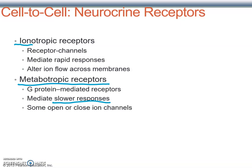Some metabotropic receptors work through G-proteins, and the G-protein will then open or close an ion channel directly — and that pathway is still fairly fast.